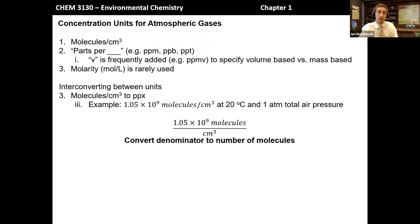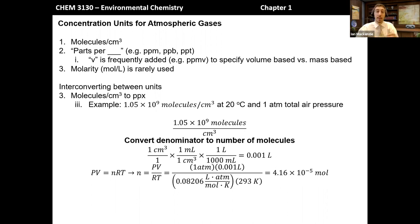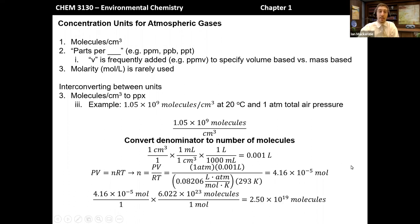What we need to do is convert the denominator to the right units — number of molecules — so it becomes molecules of this gas per molecule of total air. First, we convert cubic centimeters to liters. Then we use the ideal gas law to find the number of moles in that volume by rearranging and solving for n, plugging in the pressure, volume, gas constant, and temperature. This gives the number of moles of air in that initial cubic centimeter. Then we multiply by Avogadro's number to get the number of molecules in that initial cubic centimeter volume in the denominator.